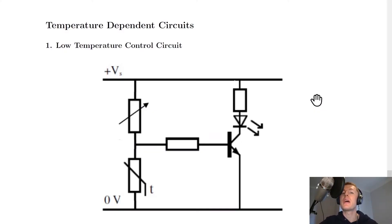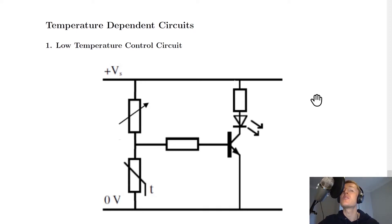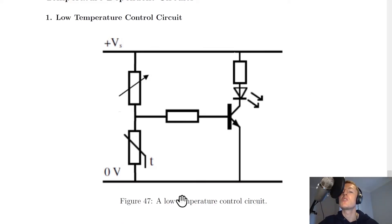There are two types of temperature dependent circuits we're going to look at. These are the low temperature and the high temperature circuits. The low temperature circuit switches on when temperature gets too low, and the high temperature circuit switches on when temperature gets too high. So let's start by looking at the low temperature circuit.